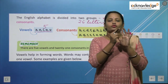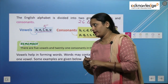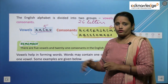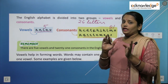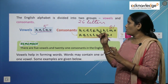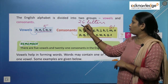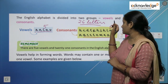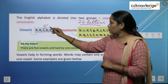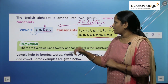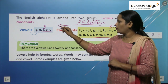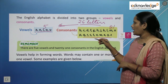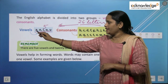There are total 5 vowels, and the remaining letters of the 26 letters of the alphabet are our consonants. So we deduct 5 from 26, and the remaining letters are the consonants.